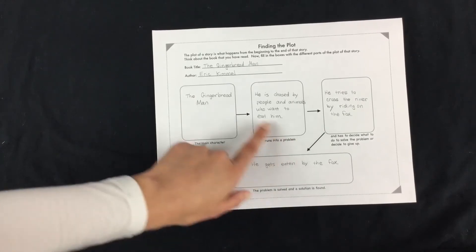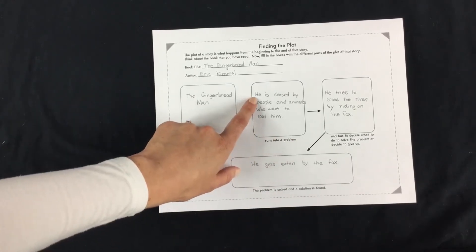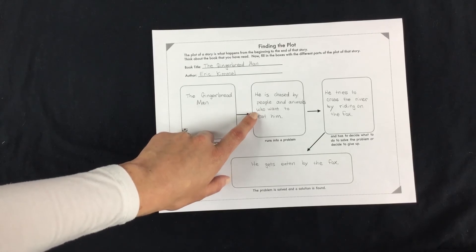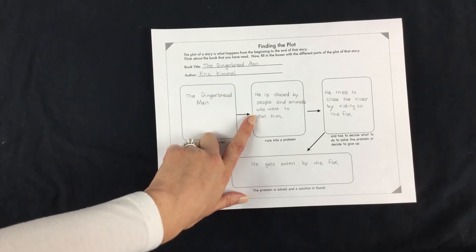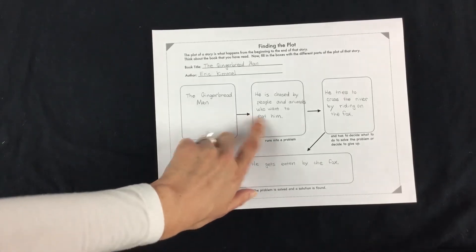Okay, he runs into a problem. His problem was he was being chased by people and animals who want to eat him. That would be a huge problem, but that's a problem you have if you are a cookie, I guess.